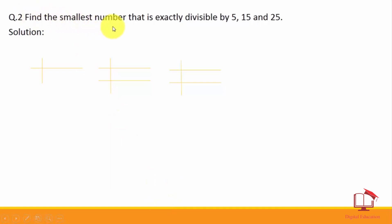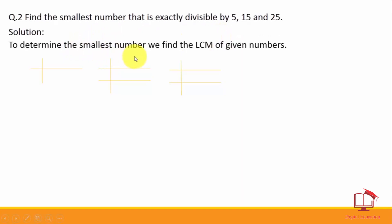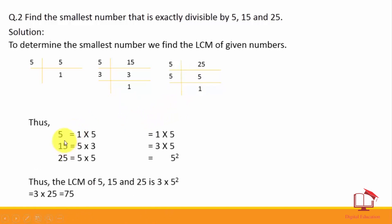Question number 2: Find the smallest number that is exactly divisible by 5, 15, and 25. To determine the smallest number, we find the LCM of the given numbers. Prime factors: 5 = 5; 15 = 5 × 3; 25 = 5². The common numbers are 5 and 3. The greatest power of 5 is 5² = 25; and 3 as it is. So LCM = 25 × 3 = 75.